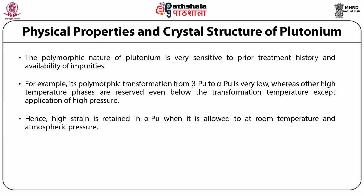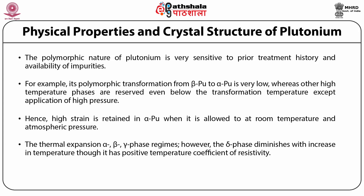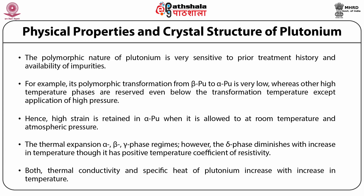Martensitic transformations can also take place in plutonium, i.e., from delta-Pu to gamma-Pu and from gamma-Pu to delta-Pu. The figure shows the variation in the linear thermal expansion coefficient with different temperature ranges. The delta phase diminishes with increase in temperature though it has a positive temperature coefficient of resistivity. The delta-prime phase reveals irregular thermal expansion behavior. Plutonium has the highest value of electrical resistivity among all metals, and both thermal conductivity and specific heat increase with temperature.